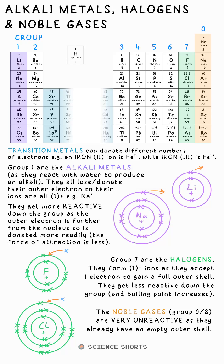As electrons are negative themselves, metals become positively charged when they lose them — they always form positive ions. All of group one lose one electron when they turn into an ion, so all of their ions are one plus, though we don't write the one, we just put plus. Group seven gain one electron each, so all their ions are minus.